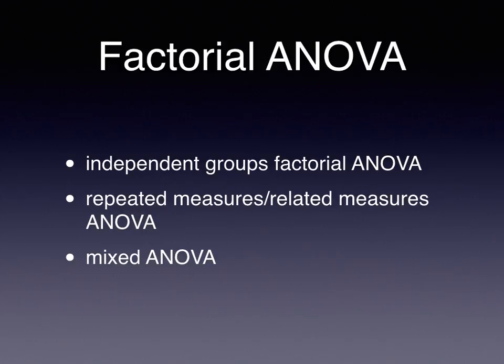You could also have a blend of this where one of your factors — one of the independent variables being manipulated in ANOVA — is independently manipulated, while another might be applied in a repeated measures way. We call that a mixed design, and you would use a mixed analysis of variance to analyze the resulting data.